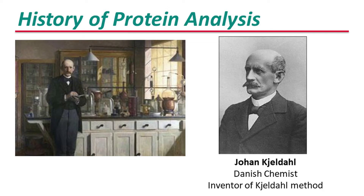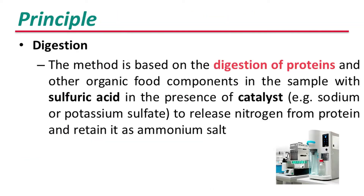Nitrogen is one of the five major elements found in organic material such as protein. This fact was recognized by a Danish chemist Johan Kjeldahl, who used it as a method of determining the amount of protein in samples taken from a wide variety of organisms. The central basis used in this procedure is the oxidation of organic materials using strong sulphuric acid.